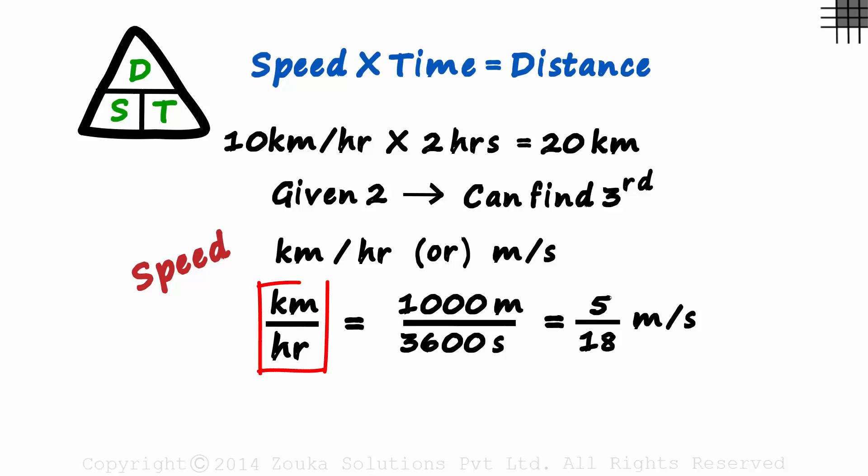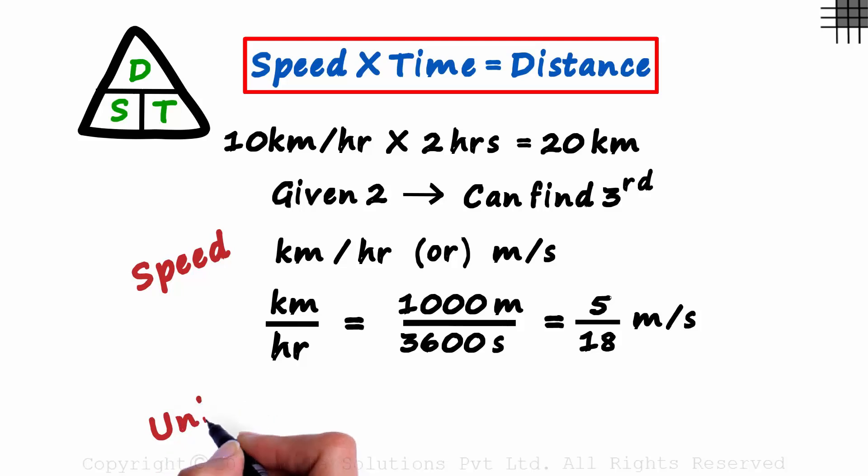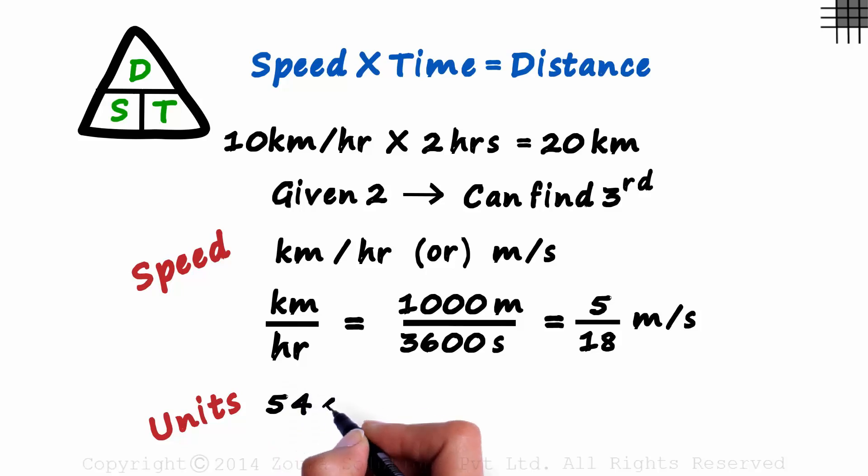Yes, 1 kilometer per hour is the same as 5 over 18 meters per second. In time, speed, and distance problems, we need to keep the units in mind. So based on what we learned, why don't you try converting 54 kilometers per hour to meters per second?